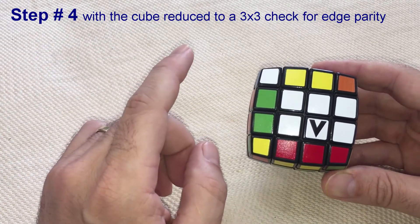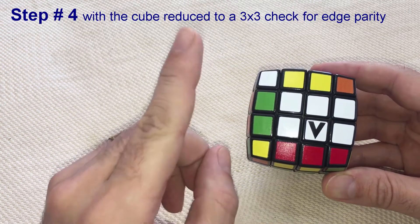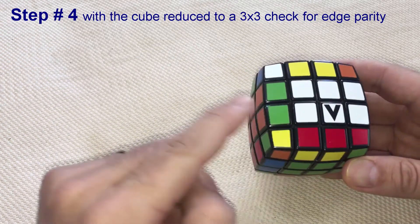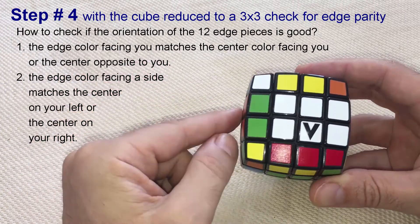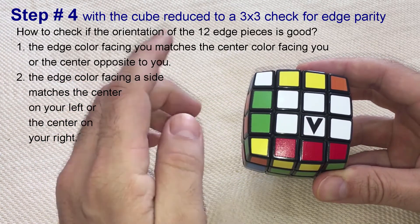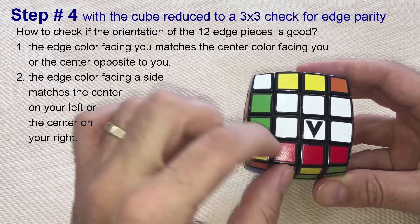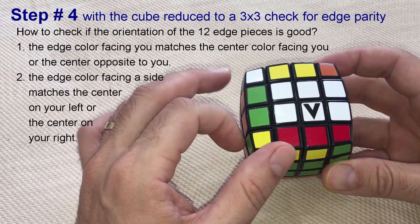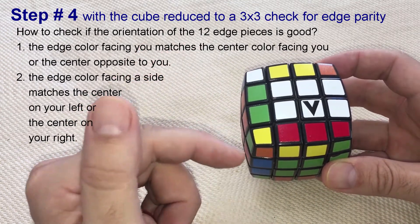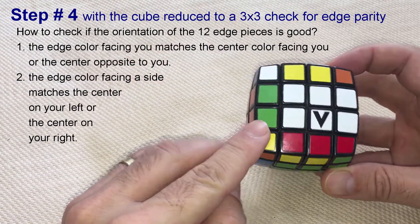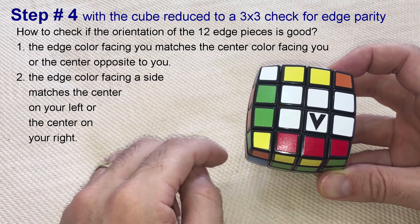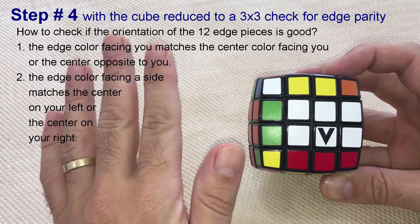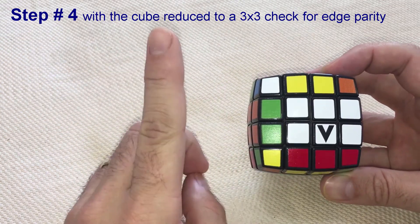So, how does it work? We are going to check the orientation of all 12 edge pieces and then count all the ones with a good orientation. If we end up with an odd number, then it means that we have an edge parity error. On the other hand, if we end up with an even number, it means that we are edge parity free. Let's start with the procedure.